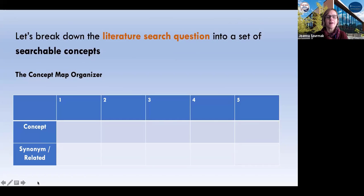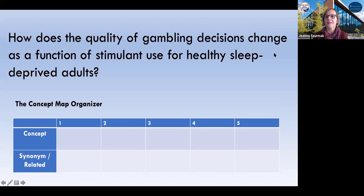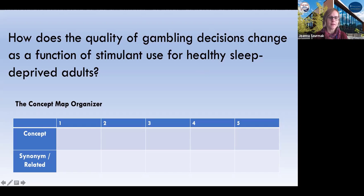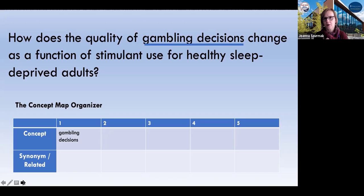So now let's grab a concept map organizer. It's the simplest organizer that helps us to break down the concept in our question into the most significant concepts. And you'll see that even there, there are some changes that you could make based on the process that we've been going through. So let's take a look at this: How does the quality of gambling decisions change as a function of stimulant use for healthy sleep-deprived adults? Well, we know we've got at least four things going on here. We've got a population that's going to be a healthy adult. But the very first thing we encounter is the quality of gambling decisions — I'm going to just put in 'gambling decisions' because a word like 'quality' is difficult to pin down and fairly common.